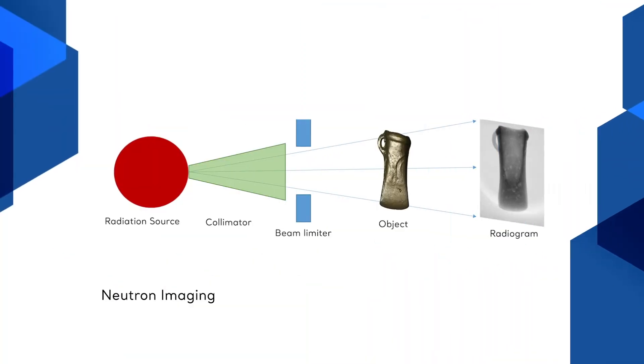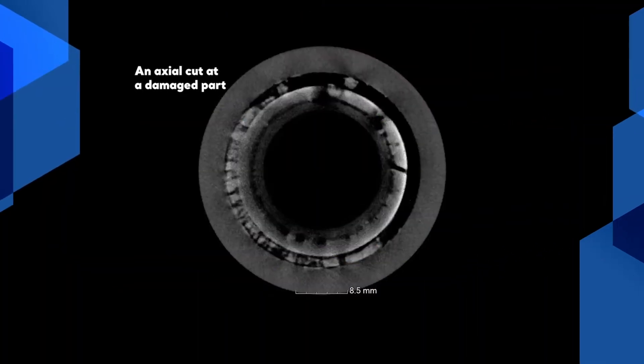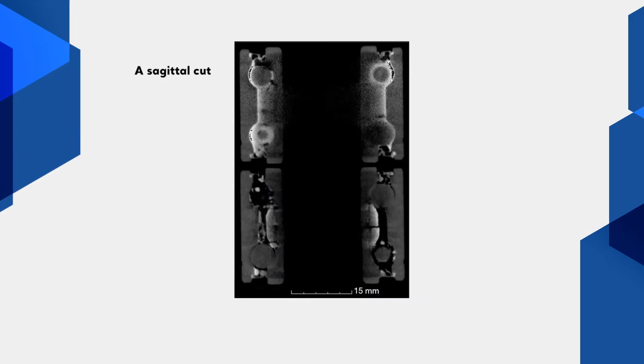With radiography, we obtain visual information on the sample by transilluminating with a particle beam and record its shadow image.